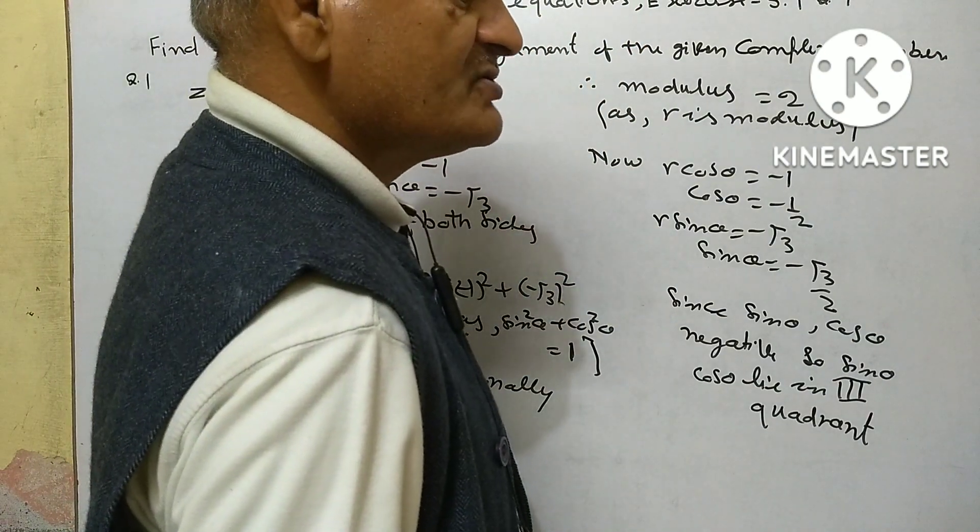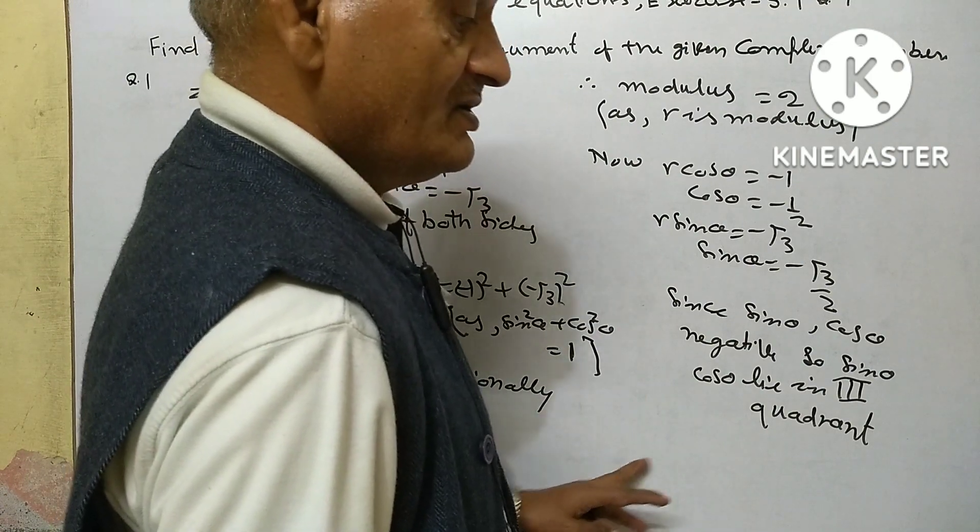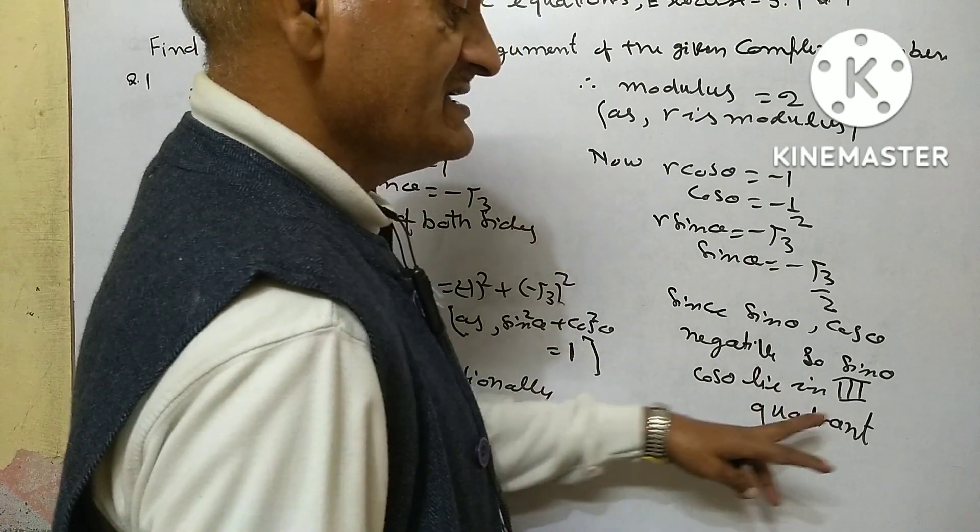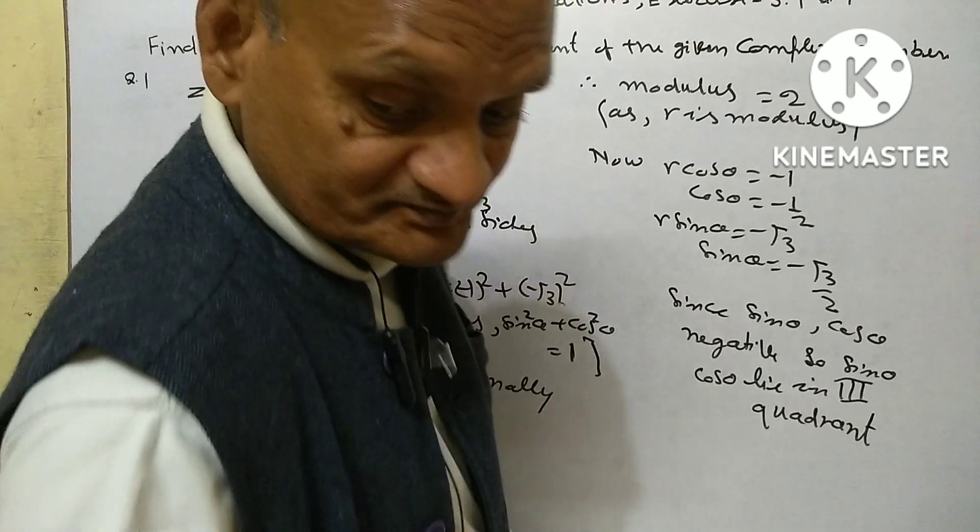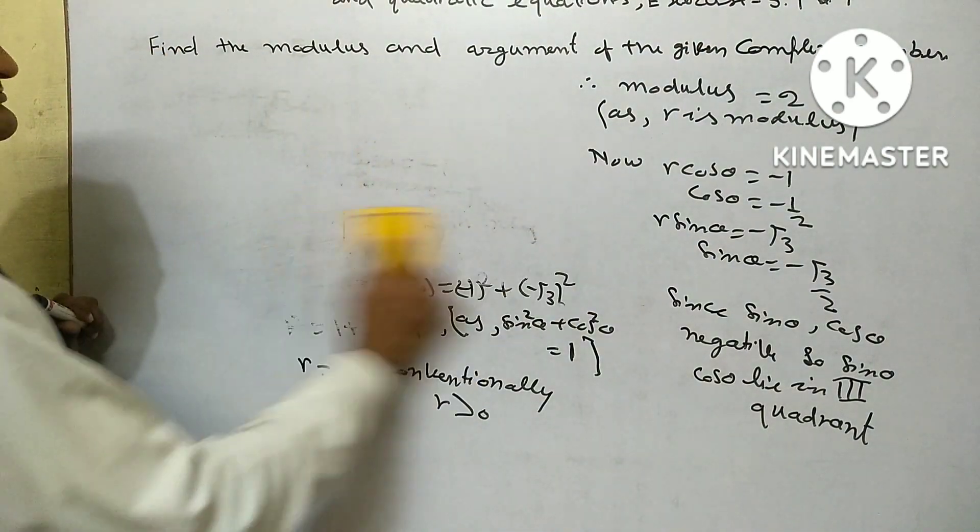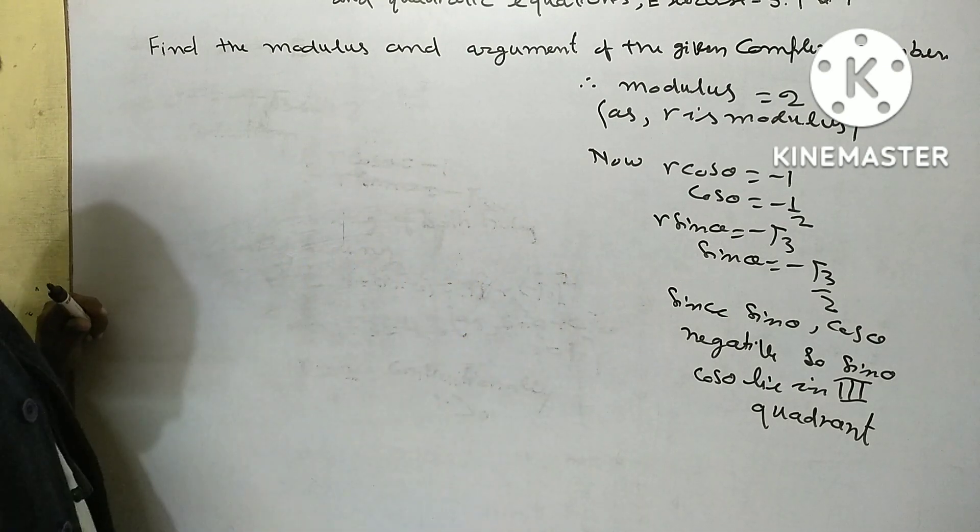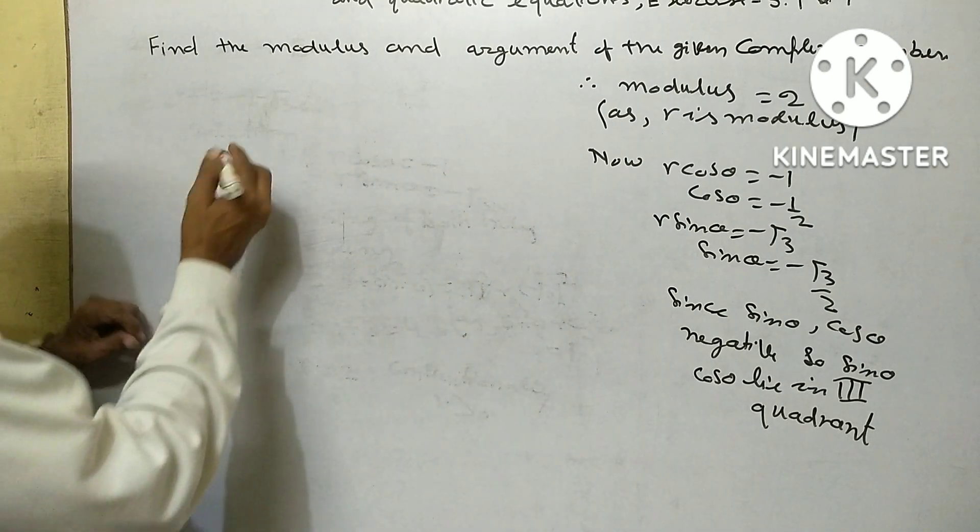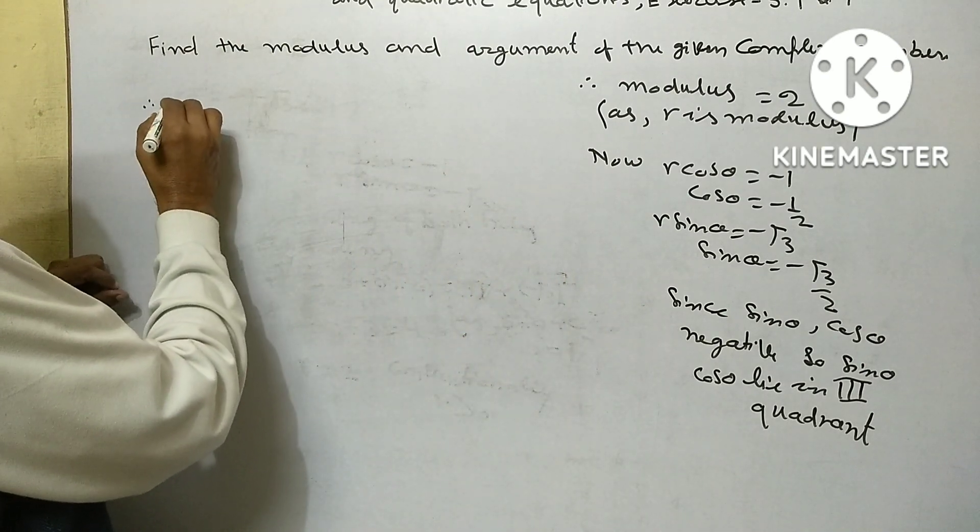Since sin theta and cos theta are both negative, they lie in the third quadrant. Therefore, argument...